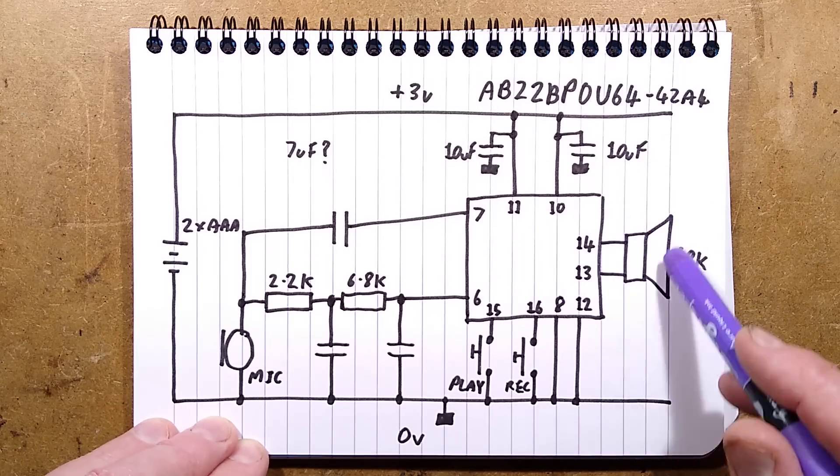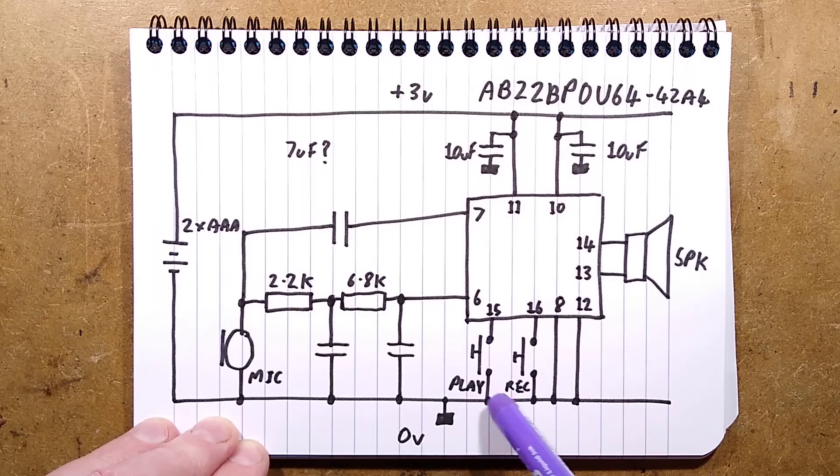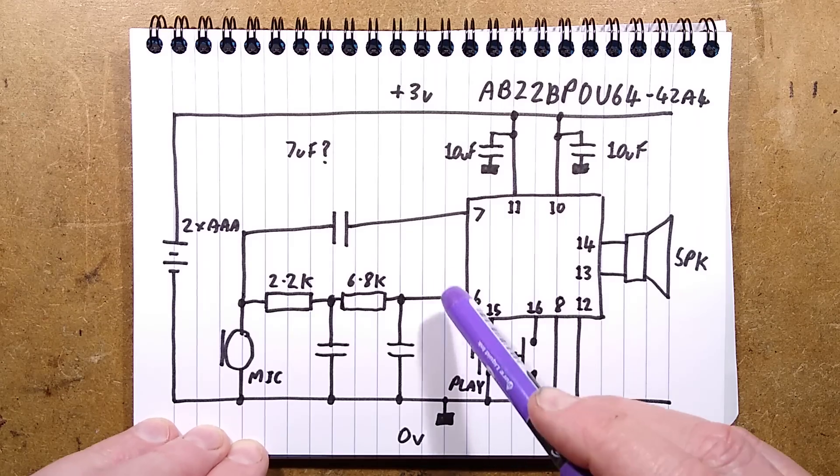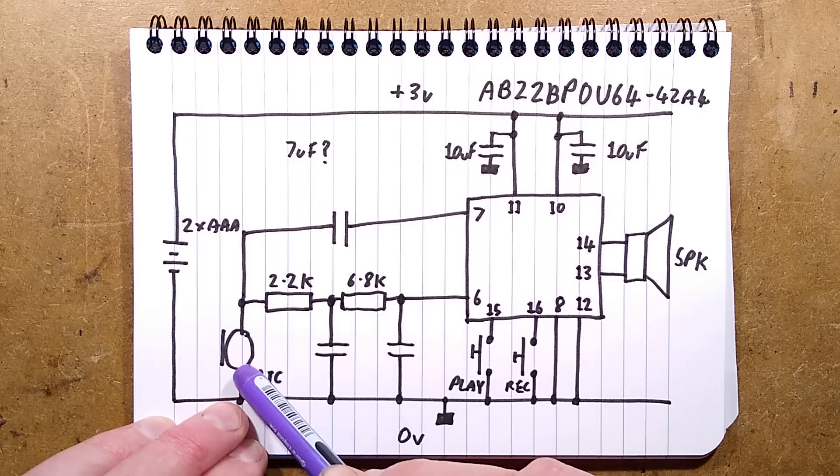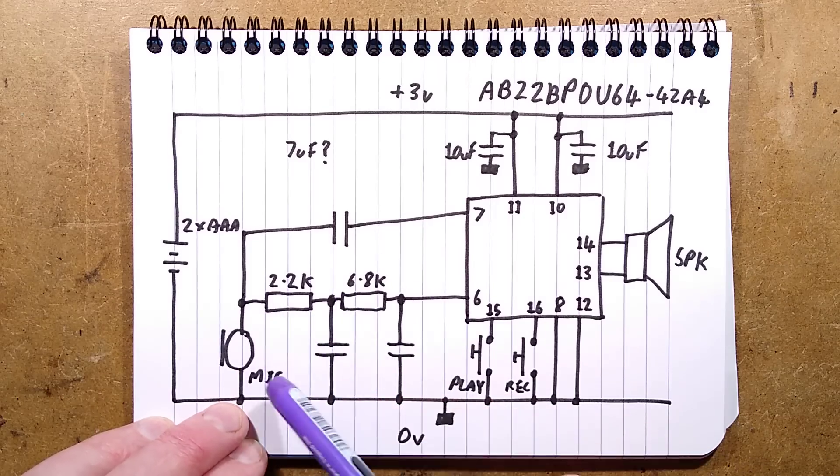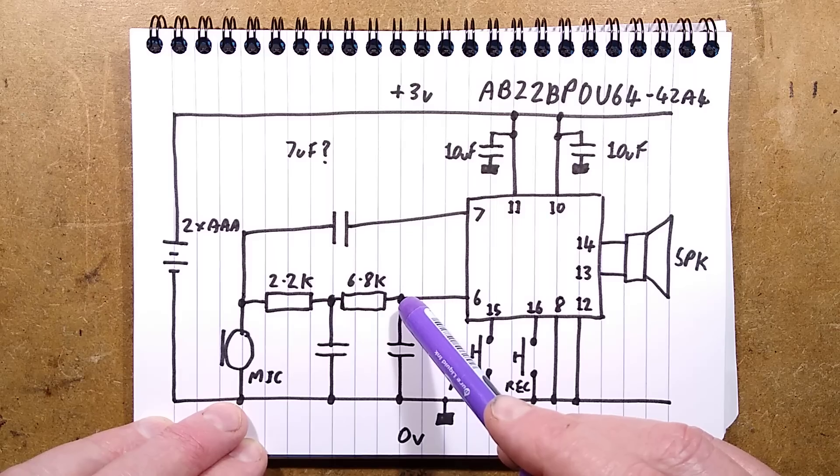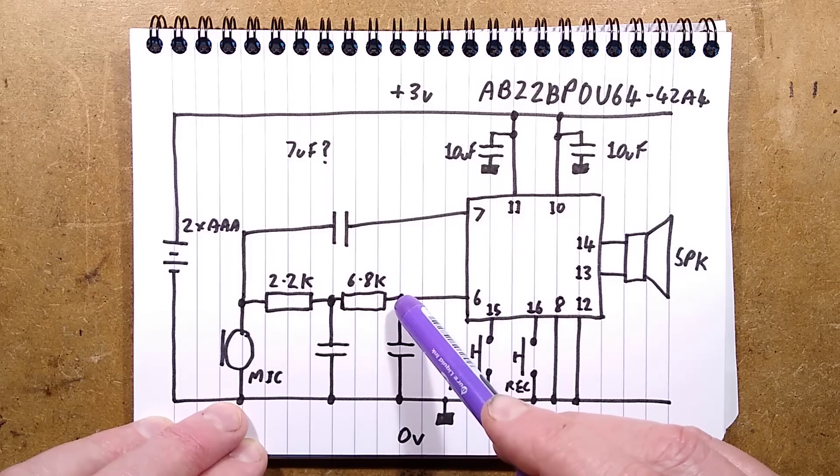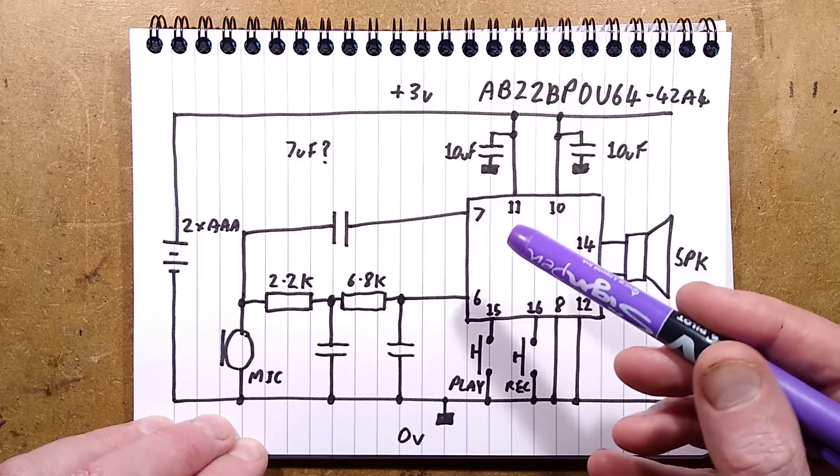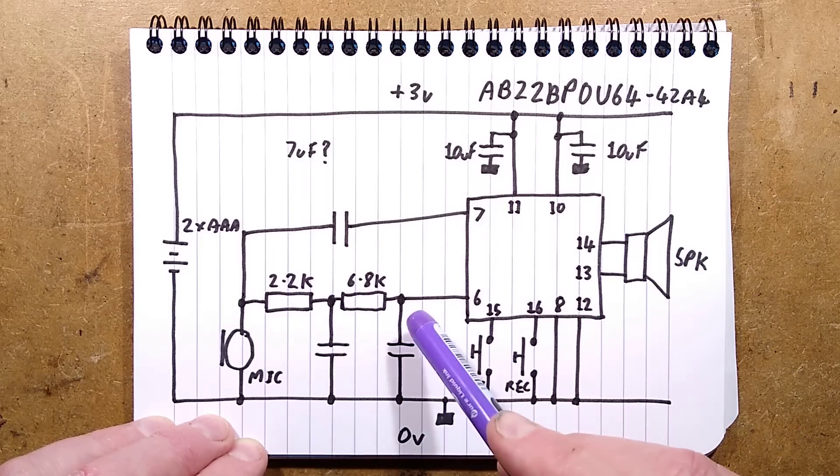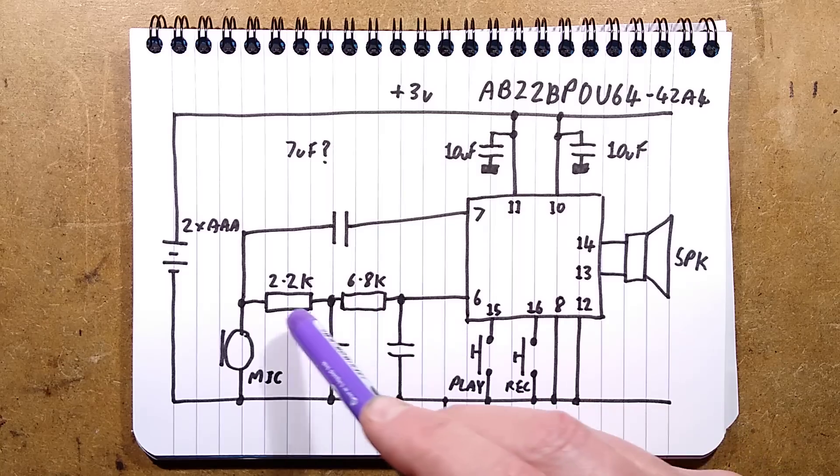We've got the speaker connected directly to pins 13, 14, 15, and 16 with the inputs pulled to the zero volt rail for the play and record buttons. We have the microphone with a connection to the zero volt rail. And then there will be a bias voltage probably coming from these resistors here with possibly gain control. Not sure. I wondered at first if these were some sort of audio filtering, which they probably could well be.